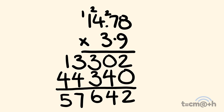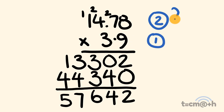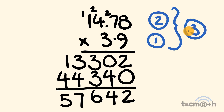Now let's work out the decimals. For 14.78 we have 2 numbers to the right of the decimal place. For 3.9 we have 1 number to the right of the decimal place. We add these together: 2 plus 1 is equal to 3. We're going to have 3 numbers to the right of the decimal place in our answer. Starting at the right we count 1, 2, 3 in and the decimal place goes right there. Our answer is 57.642.